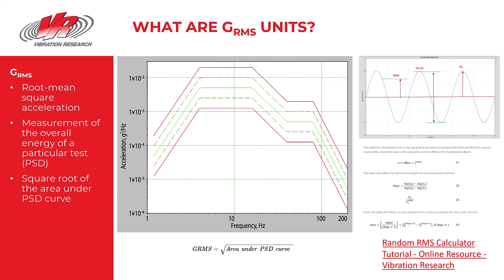GRMS literally means the root mean square acceleration of a test. GRMS is a measurement of the overall energy of a particular random vibration test, or you could say the total acceleration content for a random vibration test.